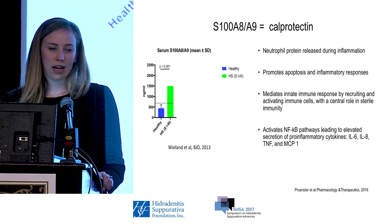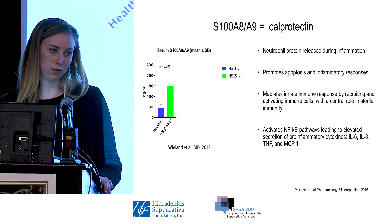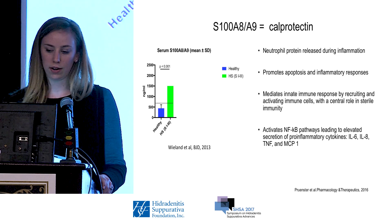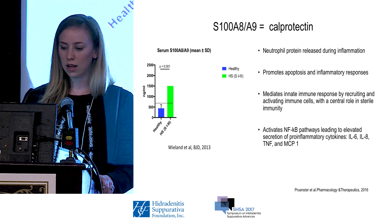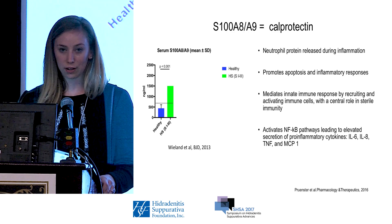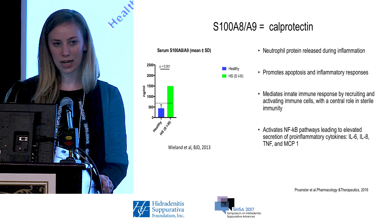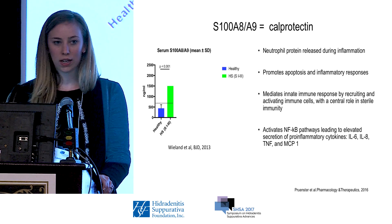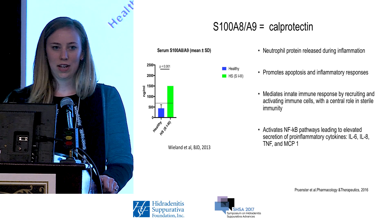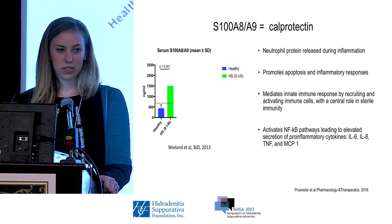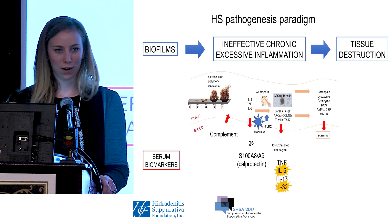When they looked at calprotectin levels according to Hurley's stage, they did not find a significant difference using this measure of disease severity. Calprotectin is a neutrophil protein released during inflammation, used as a marker to diagnose inflammatory bowel disease, and it promotes apoptosis and inflammatory responses by mediating the innate immune response, recruiting and activating immune cells especially in sterile immunity. It is also involved in activating the NF-κB pathway, leading to elevation of a number of pro-inflammatory cytokines.